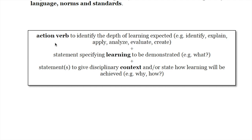The recipe starts with an action verb that identifies the depth of learning expected — words like identify, explain, apply, analyze, evaluate, create. The second component is a statement of the learning to be demonstrated: what is it that students will be doing? The final one is a statement that gives disciplinary context about how learning will be achieved — this is the why or the how. The main thing to keep in mind is it should be obvious that your outcome is from your own discipline and not from another discipline entirely.